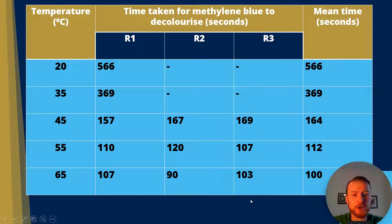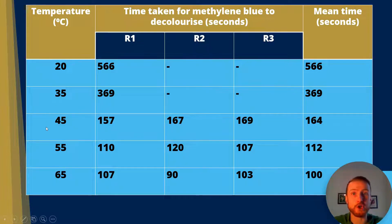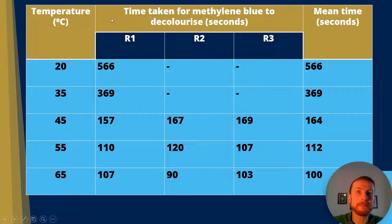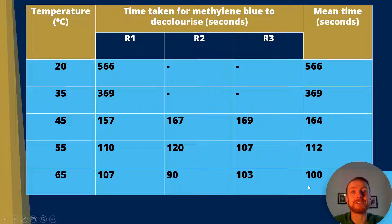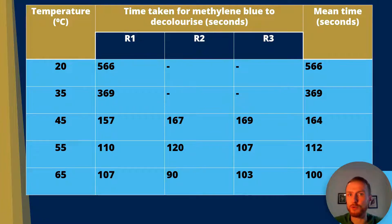Here is some data from students who have done a really successful investigation this week. We've got temperatures on the left-hand side as the independent variable, and on the right-hand side the dependent variable — the time taken for methylene blue to completely decolourise. The results show a shorter time is needed to decolourise methylene blue as temperature increases. You can draw conclusions about this in terms of kinetic energy and the movement of molecules.